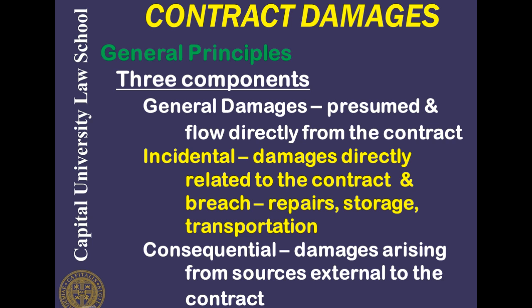Finally, there are consequential damages, which arise from sources external to the contract. The predominant example is lost profits from the resale of goods — for instance, where a buyer purchases tires from a manufacturer, runs a tire store, and resells them. If the contract is breached, the buyer may lose this income, but this loss results from factors external to the contract itself.